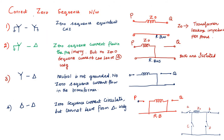I am going to explain how to draw the zero sequence network. In the first case, the primary star is grounded and the secondary star is also grounded. Zero sequence current can flow through the neutral.